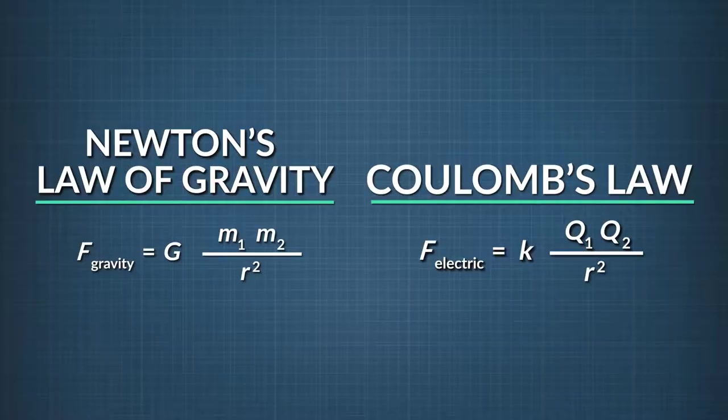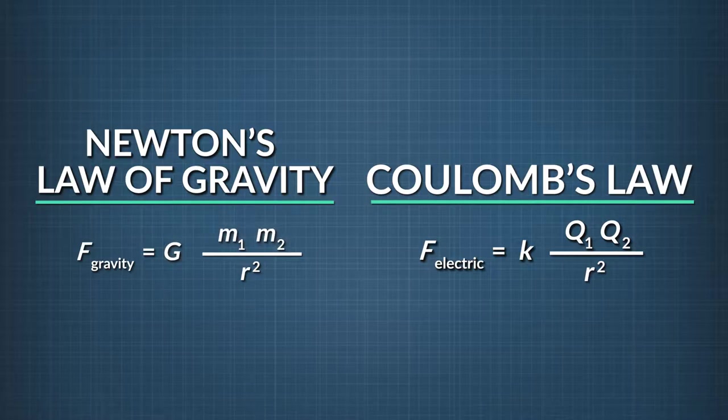His law, which measures the electric force between particles, and Newton's law, which measures the gravitational force between masses, are very similar. For gravity, the force between two objects with a mass is a constant G times the product of the two masses, divided by the square of the distance between them.